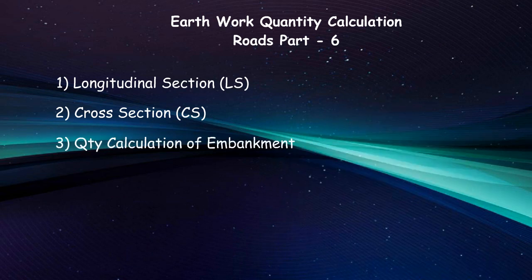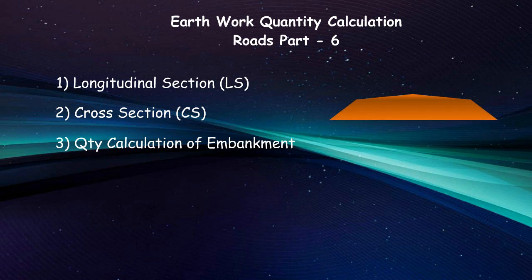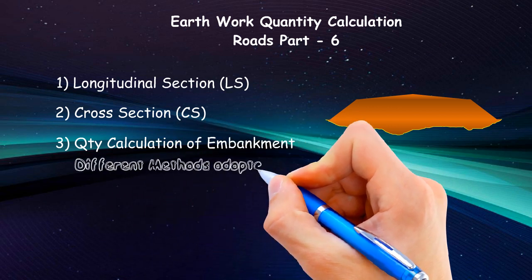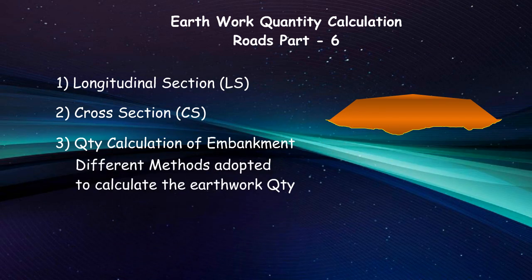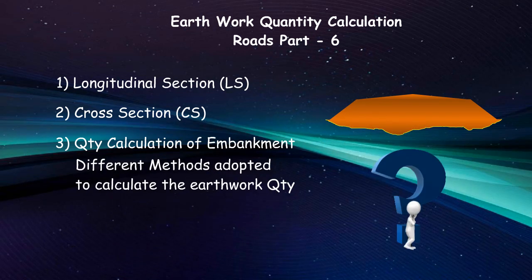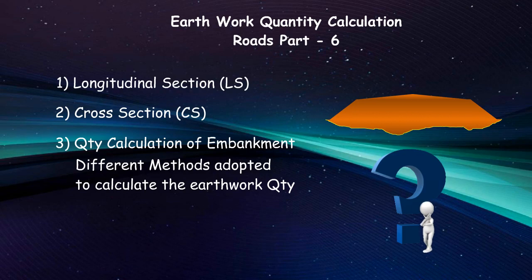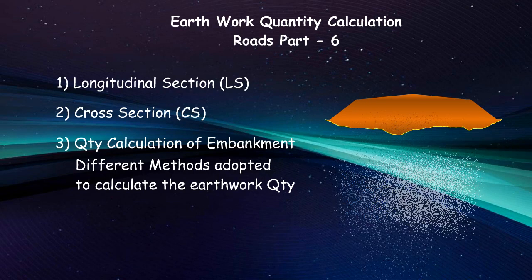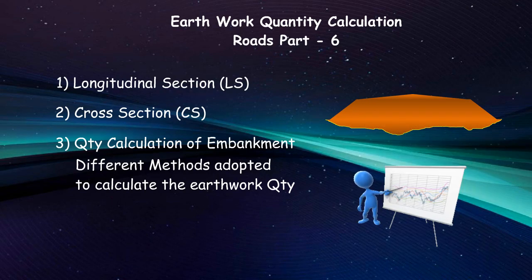This will be done after considering the road camber, the side slope of the embankment, and the undulated existing grounds. We will also discuss what other different methods are adopted to calculate that quantity, why the quantity differs from each other, and which method is commonly adopted in the engineering field.